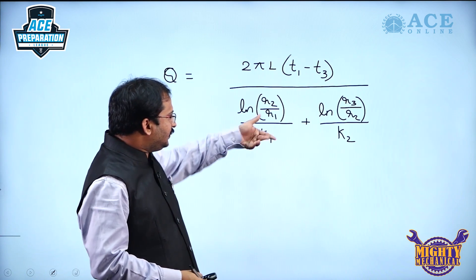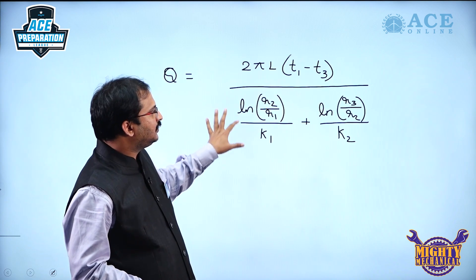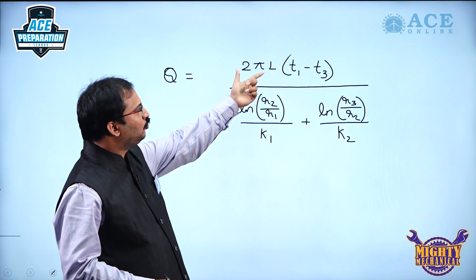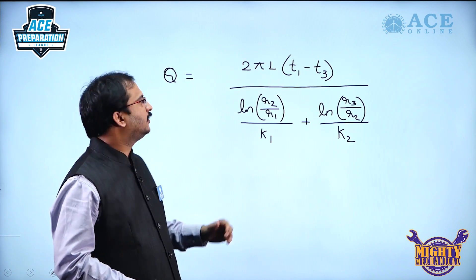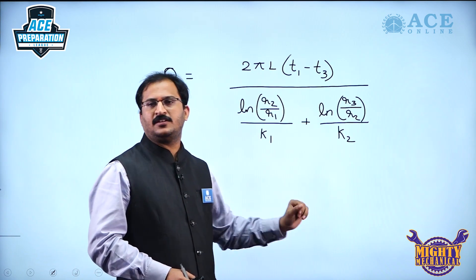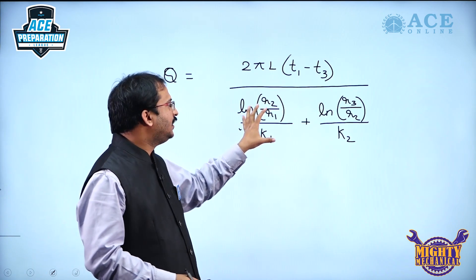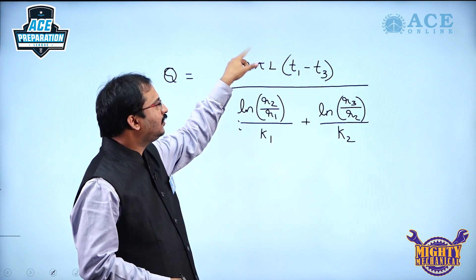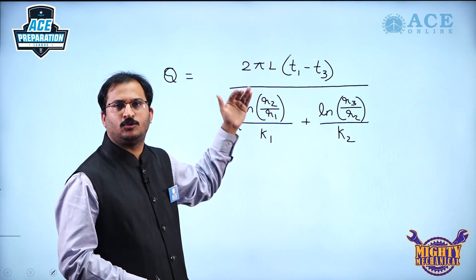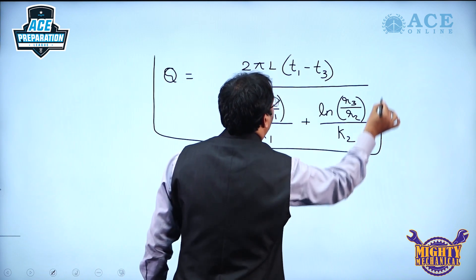Now, see this denominator term is not RTH here. The reason is we have taken 2πL to the numerator. So if this 2πL is also there in this expression and in this expression, you can write it as RTH1, RTH2, but here we cannot write because I have taken 2πL to the numerator. This is the formula for heat transfer here.